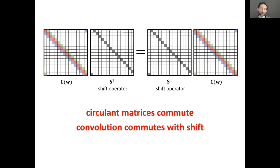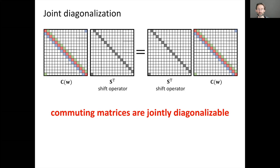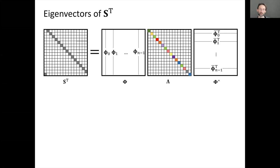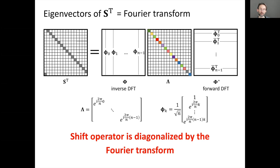This is an if-and-only-if statement: a matrix is circulant (i.e., a convolution) if and only if it commutes with the shift. This beautifully illustrates deriving architectures from symmetry principles: requiring shift equivariance forces the linear operator to be a convolution. We also know that circulant matrices are jointly diagonalizable — there exists a common set of eigenvectors. The eigenvectors of the shift are precisely the Fourier basis.